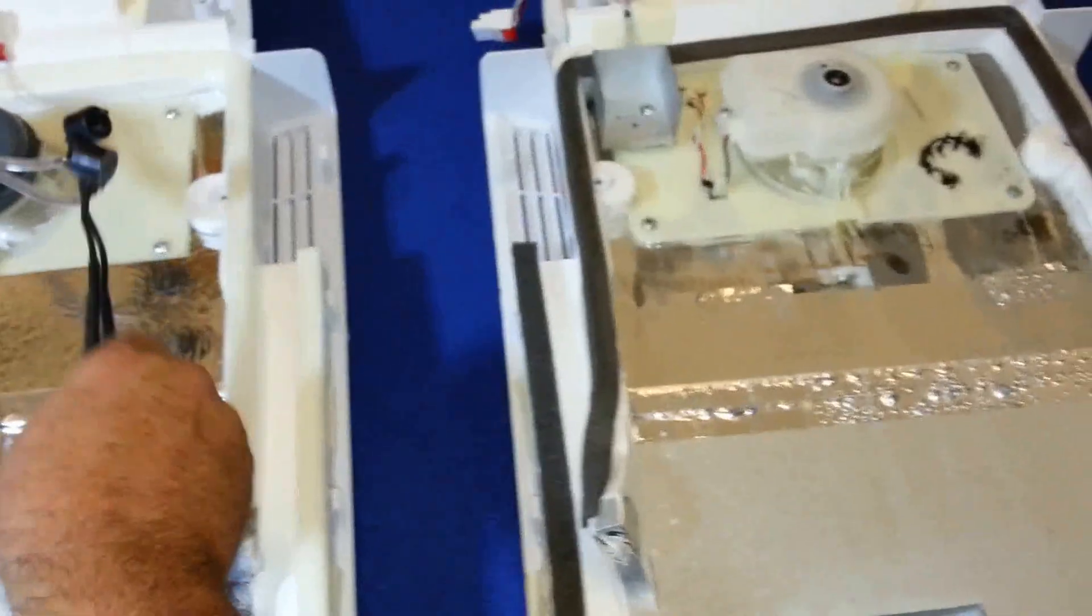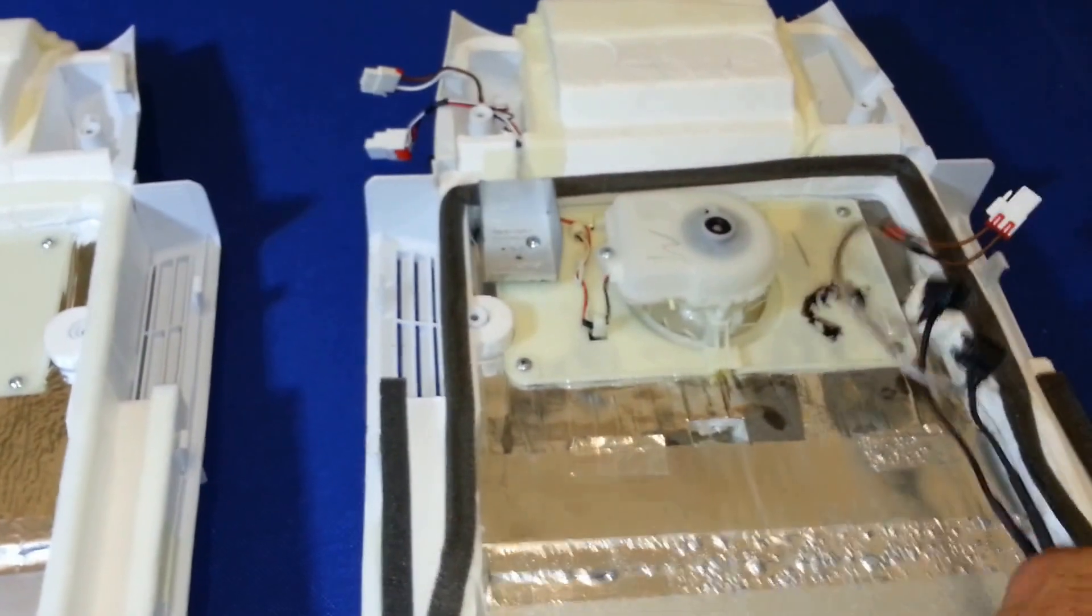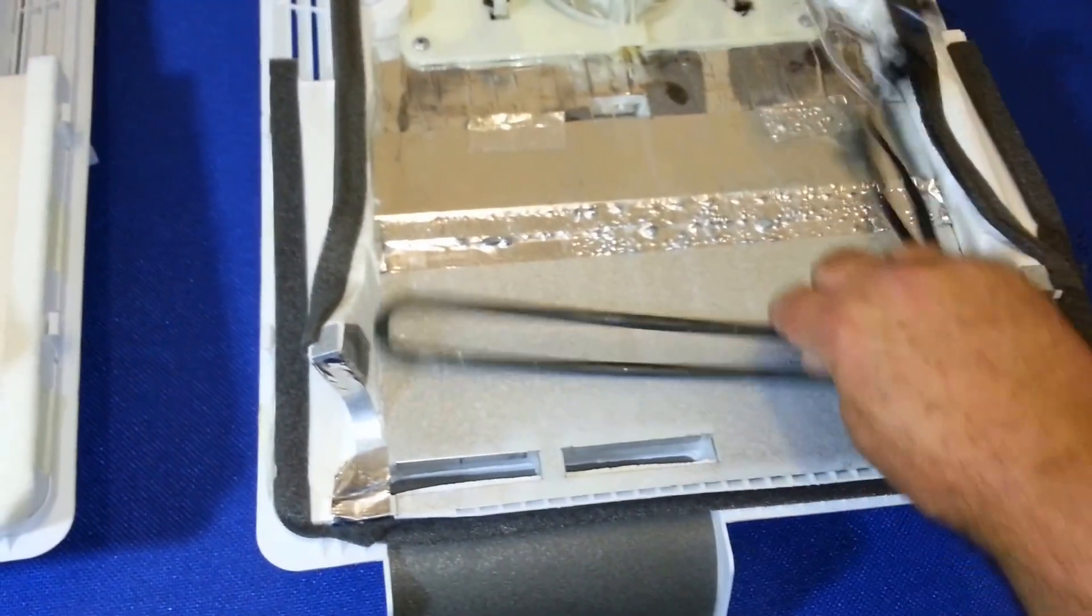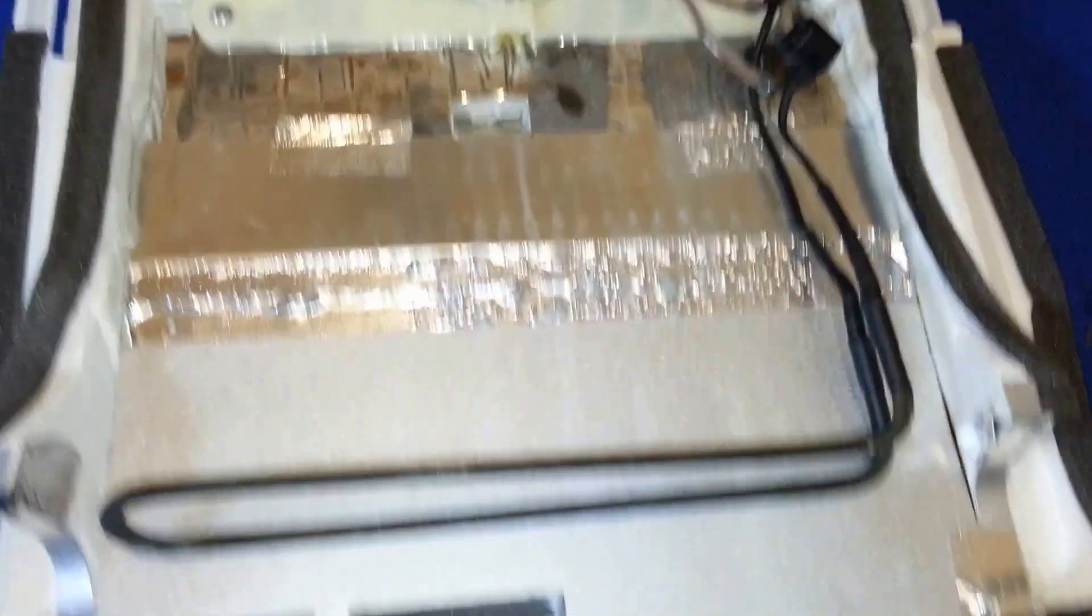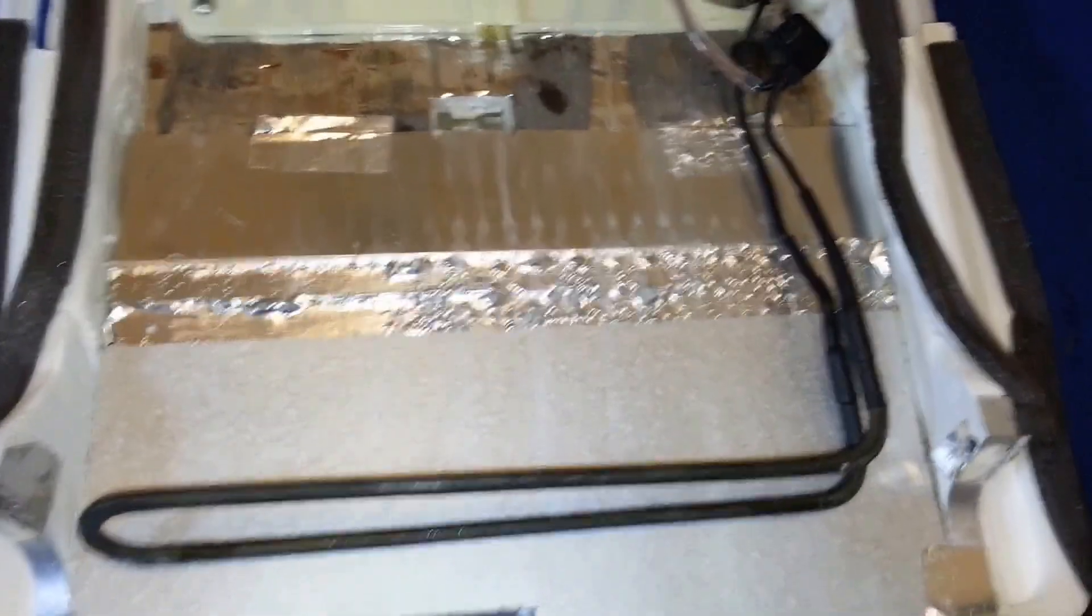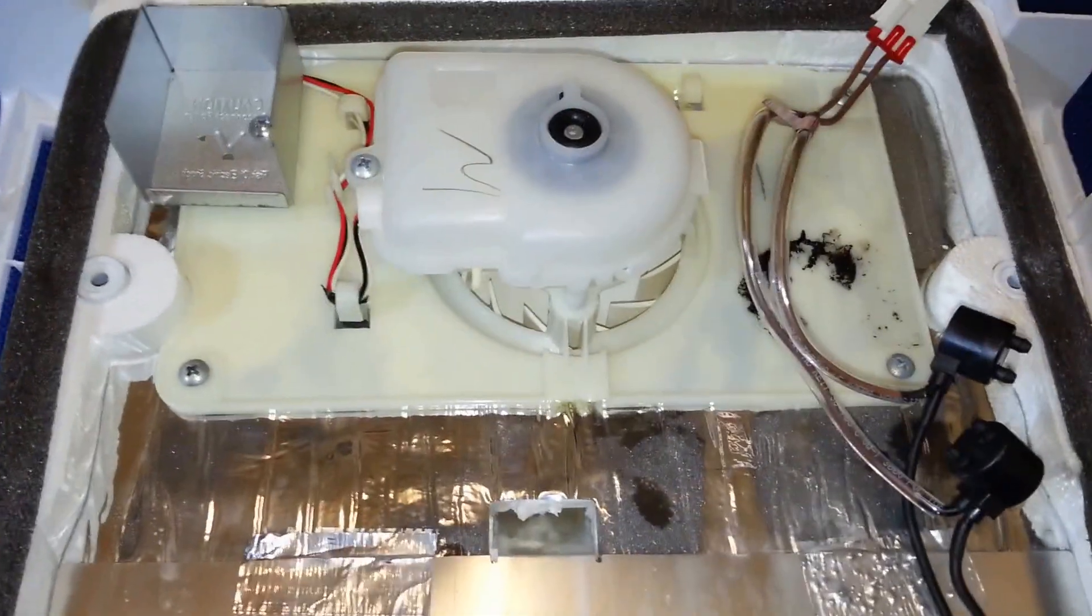You can see over here on the older cover the defrost element would pretty much sit like that. As you can see there's no transfer clip there at all, so basically the heat's having to try and get up from there on the heater up to the fan.